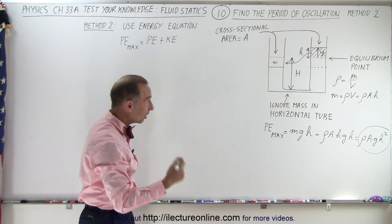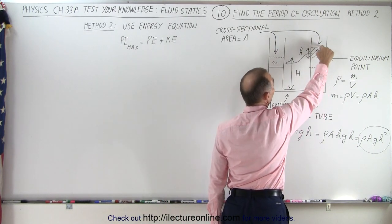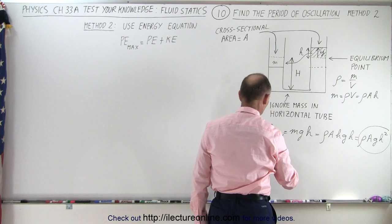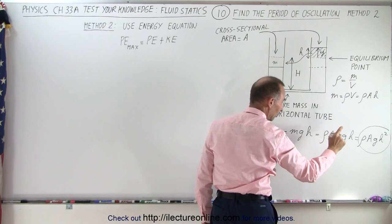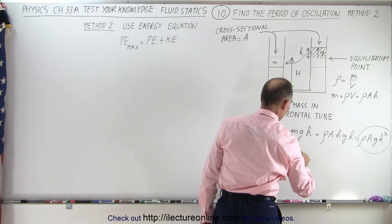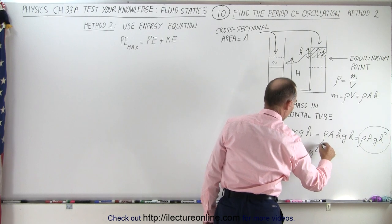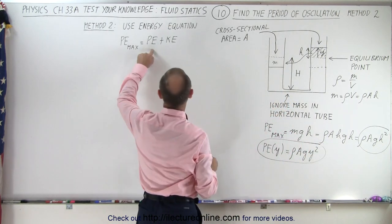The potential energy at any point in time is going to be the distance of the top part of the water away from the equilibrium point. So the potential energy as a function of position Y is going to be the same thing, but instead of H we use Y — so it's density times A times G times Y squared.